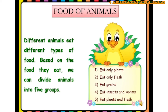The five groups are: 1. Eat only plants. 2. Eat only flesh. 3. Eat grain. 4. Eat insects and worms. 5. Eat plants and flesh.